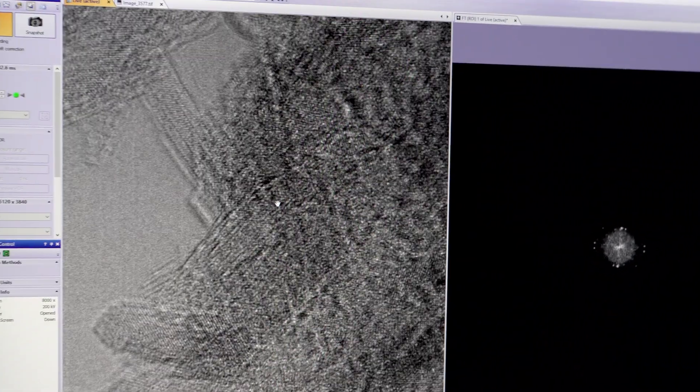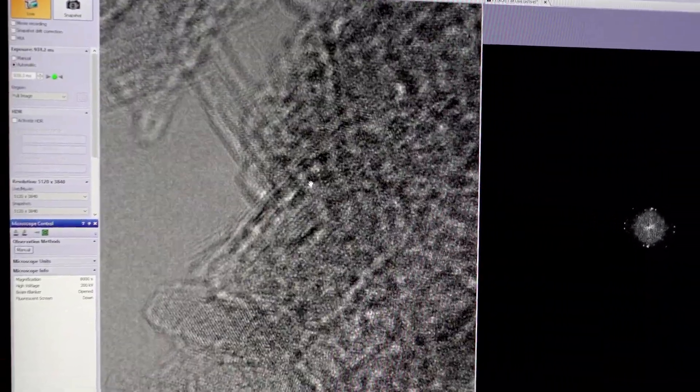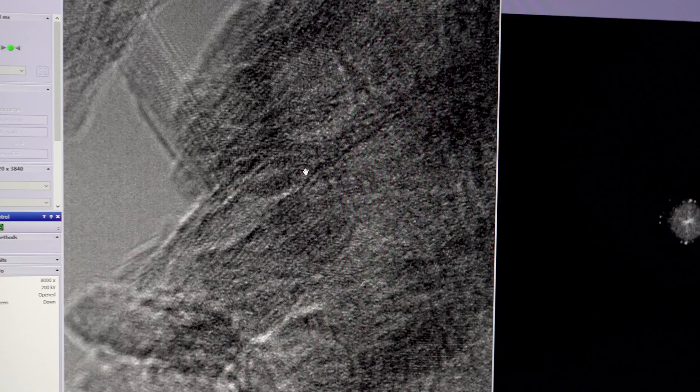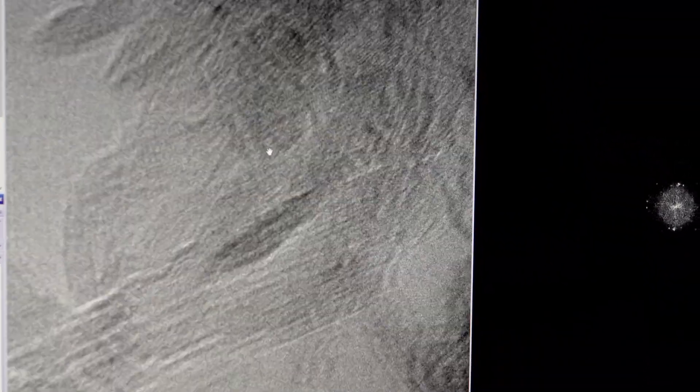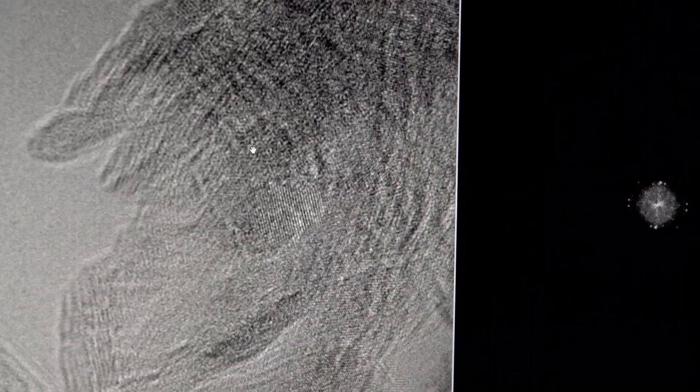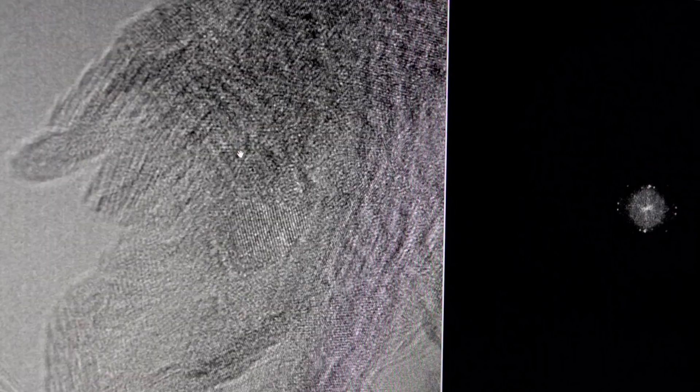We are trying to understand what sort of arrangement of planes you have here. So these fringes that you see are atomic planes, and by understanding with different elemental doping and concentrations how the structure changes and thereby how the properties of a material are affected.